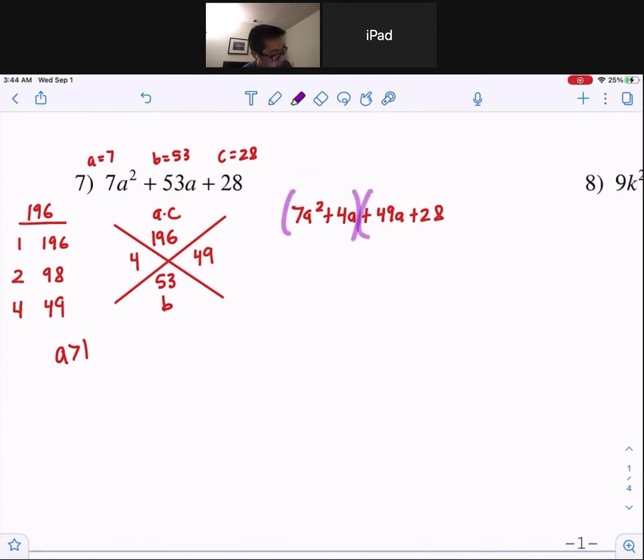You guys split this off into its two factors. And now, you guys factor by grouping. The only thing we can factor off from this first group, you guys, is a a. So, we get 7a plus 4. For this one, you guys, between 49 and 28, you guys can factor off a 7.